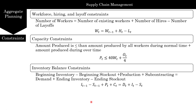Inventory constraints: beginning inventory minus beginning stockout, plus production and subcontracting — all the supply coming in — must equal demand plus ending inventory minus ending stockout — all the demand going out. This inventory balance constraint is applied for all six time periods.